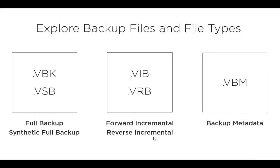Before discussing each backup type, let me mention the file extensions created during backup. VBK represents a full backup. VSB is used for synthetic full backup. VIB is used for forward incremental backup. VRB is used for reverse incremental backup. And VBM is backup metadata, which holds all the information for all types of backup — whether forward, reverse, or incremental.